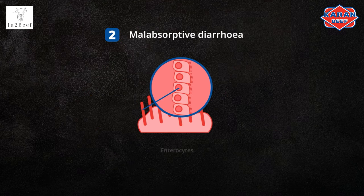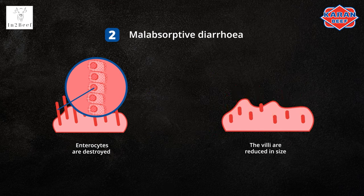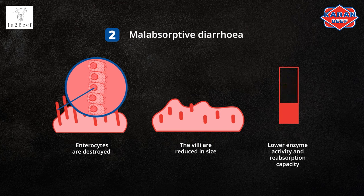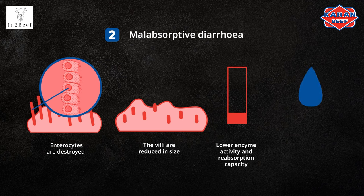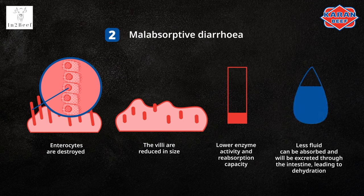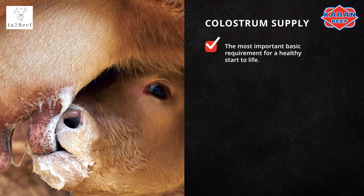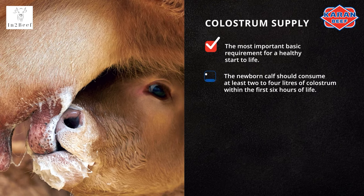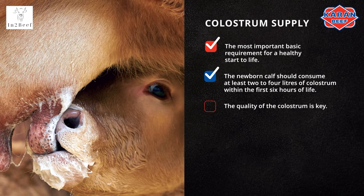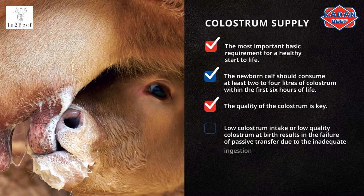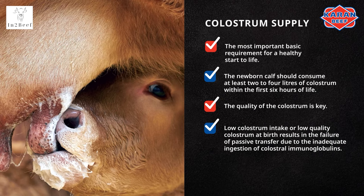In malabsorptive diarrhea, the enterocytes are destroyed and the villi are reduced in size. The result is a lower enzyme activity and reabsorption capacity. Because of the reduction in villi length, less fluid can be absorbed and will be excreted through the intestine, leading to dehydration. Colostrum supply is the most important basic requirement for a healthy start to life. The newborn calf should consume at least two to four liters of colostrum within the first six hours of life. In addition to the timing, the quality of the colostrum is key. Low colostrum intake or low-quality colostrum at birth results in failure of passive transfer due to inadequate ingestion of colostral immunoglobulins, which is associated with an increased risk of mortality and decreased health status.